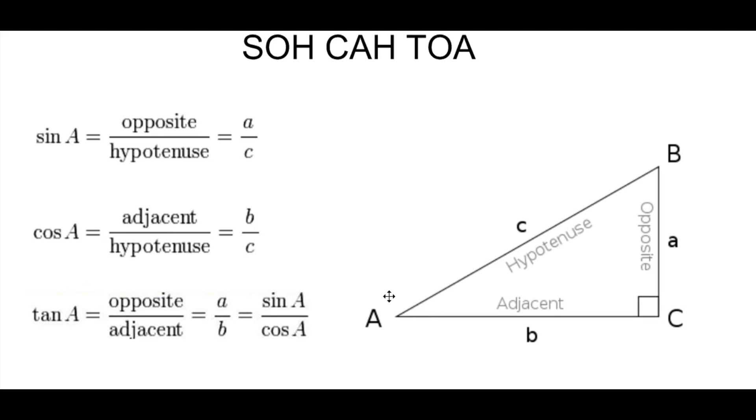Sine of angle A is defined as the opposite side over the hypotenuse. Cosine of angle A is the adjacent side divided by the hypotenuse. And tangent of angle A is sine over cosine, which is opposite over hypotenuse divided by adjacent over hypotenuse, which turns out to be opposite over adjacent.